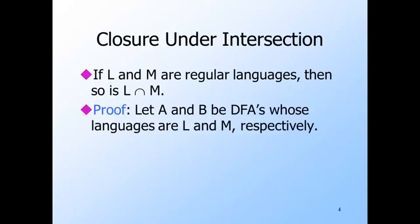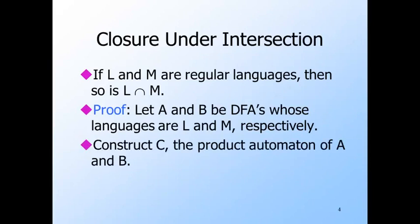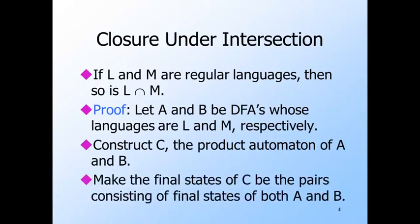Regular languages are also closed under intersection. For intersection, we can't use regular expressions very easily. But the DFA is perfect for proving closure under intersection. So we take DFAs A and B for the two languages whose intersection we want, and we construct the product automaton. The final states of the product are those states that are final in both of the given automata. Thus, the product accepts an input string if and only if both of the original automata do, and that's exactly what we want for intersecting the languages.